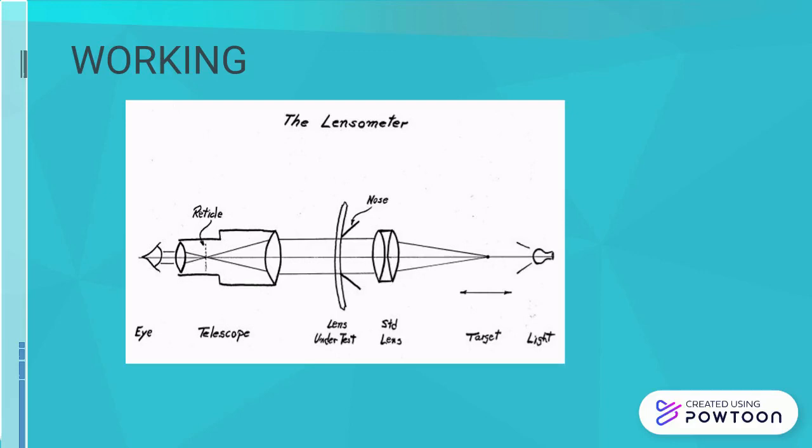So a power knob is rotated in order to clear the image of the target. The amount of knob rotated determines the extra power inserted in between the standard lens and the eyepiece.